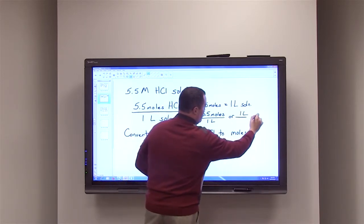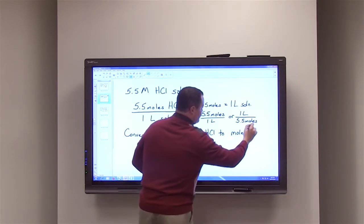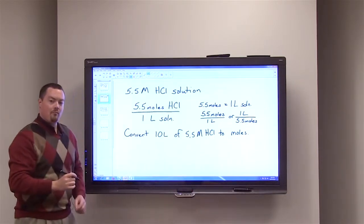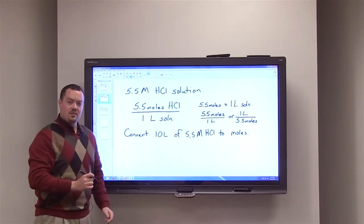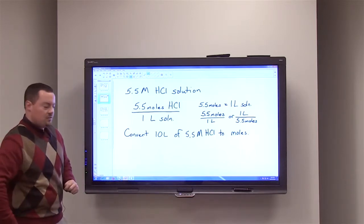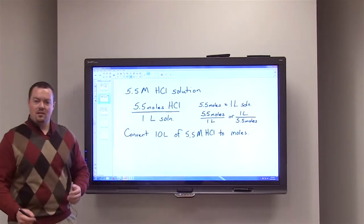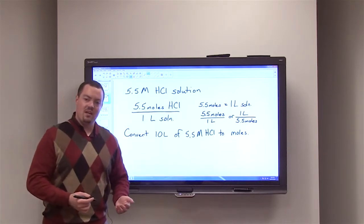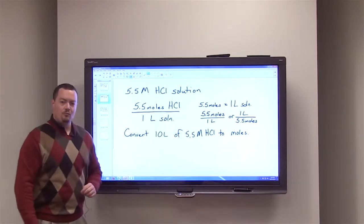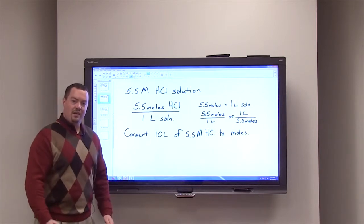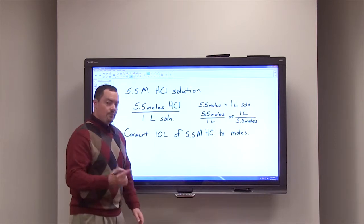Our two conversion factors are 5.5 moles over one liter, or one liter over 5.5 moles. We'll use these conversion factors to convert 10 liters of a 5.5 molar HCl solution to moles — for example, if we wanted to make 10 liters of that solution, how many moles of HCl do we need?